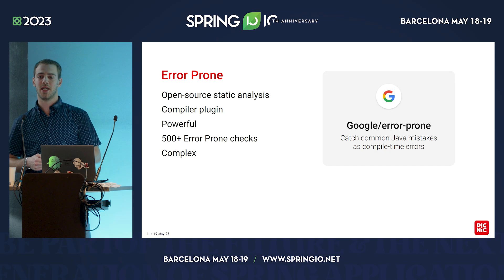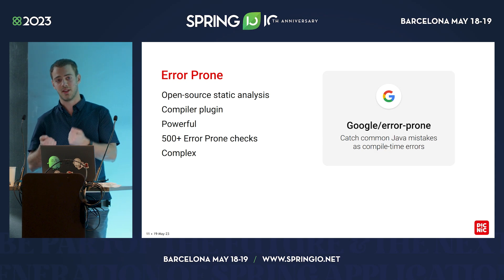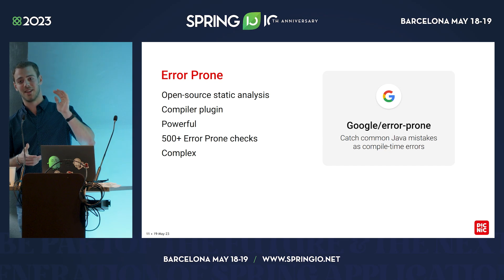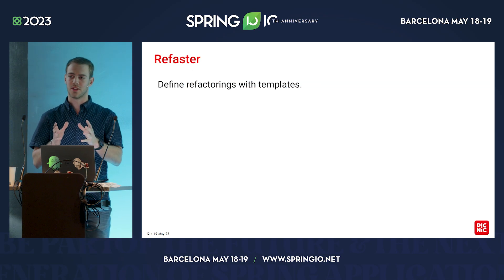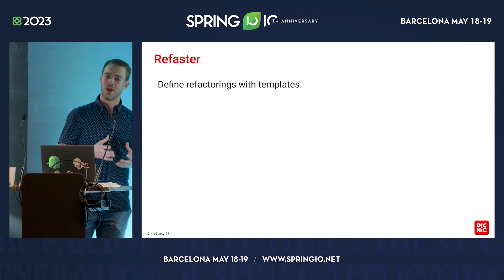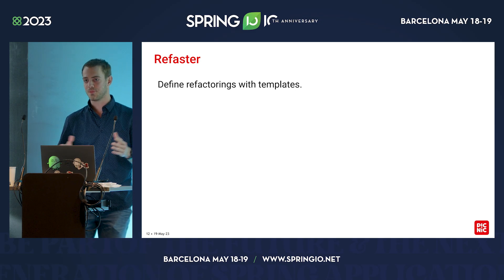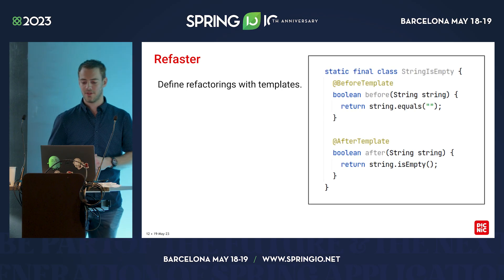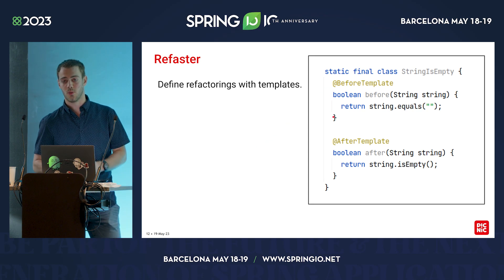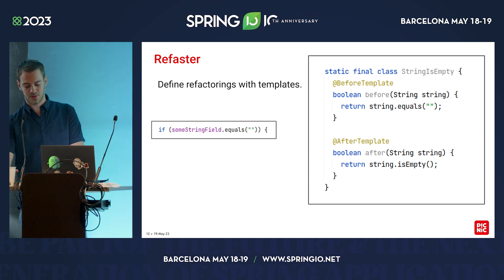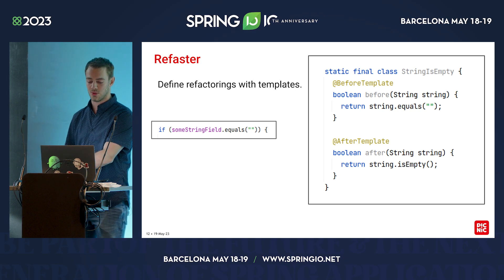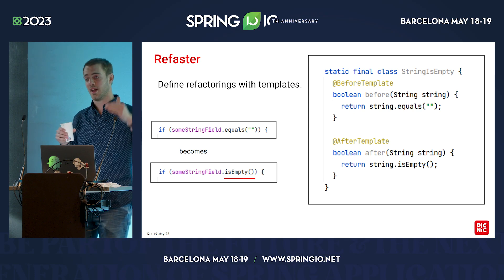The guys at Google thought about this and created another tool on top of error-prone called Refaster. With Refaster, you can specify refactoring operations using before and after templates. Here's a simple before template specifying what code to match, and in the after template, if you run Refaster in patch mode, it will automatically rewrite the code for you. So here is an example of a condition in an if statement — if you apply this Refaster rule, it would automatically get rewritten over your whole code base.